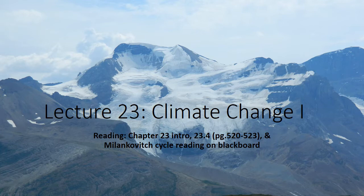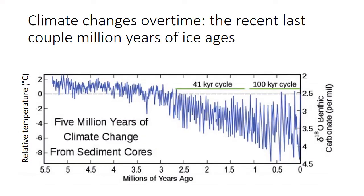Today we're going to focus on factors that influence climate change during both ice ages, as well as those factors that influence our current climate change. At the end of today, we will actually start going over the history and development of our understanding of how CO2 specifically impacts climate. If we look at a record of the temperature on Earth over the past five million years, you will see that climate has by no means been stable. This graph shows us temperatures that have been reconstructed using what we call temperature proxies.